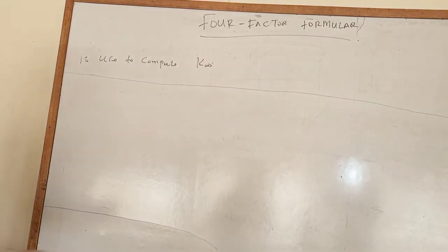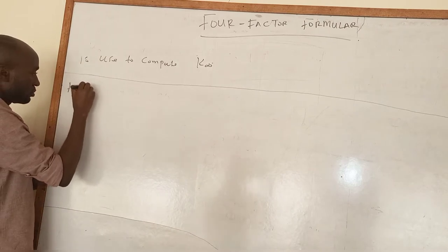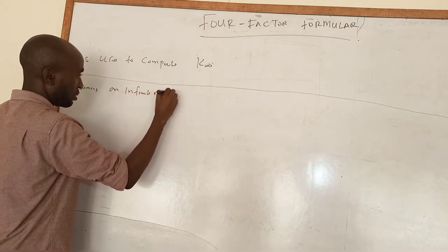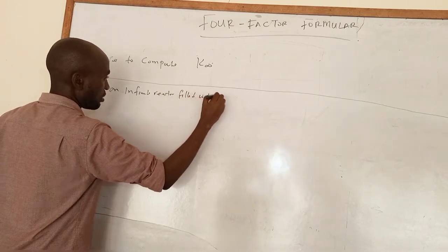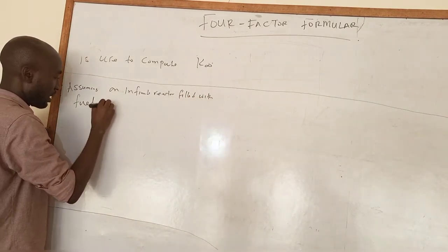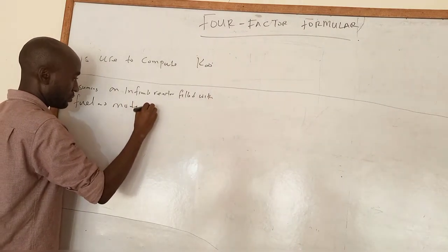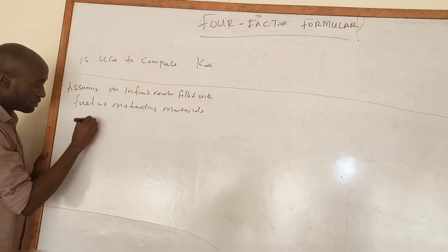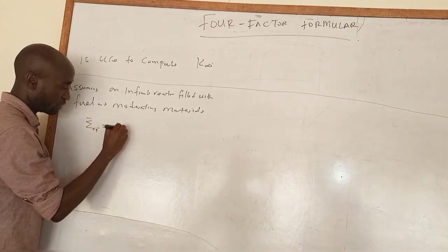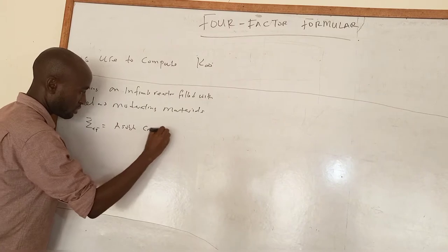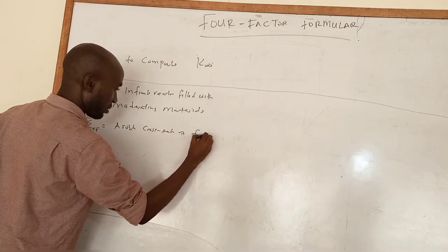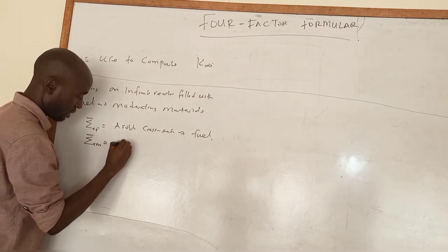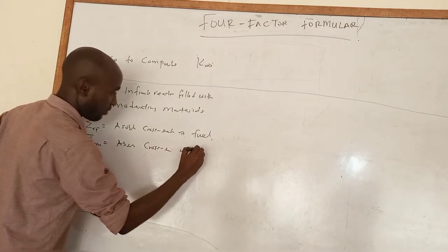How are we going to go about it? Let's assume an infinite reactor filled with fuel and moderating material. Let Σ_AF be the absorption cross-section of the fuel, and Σ_AM be the absorption cross-section of the moderator.